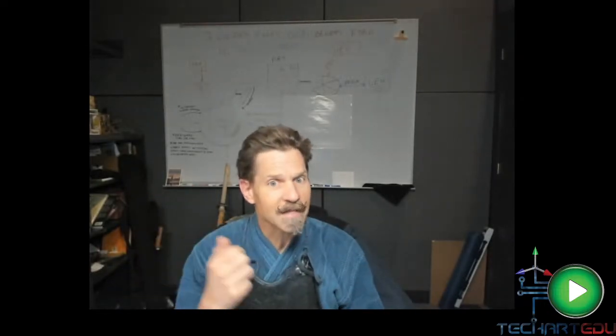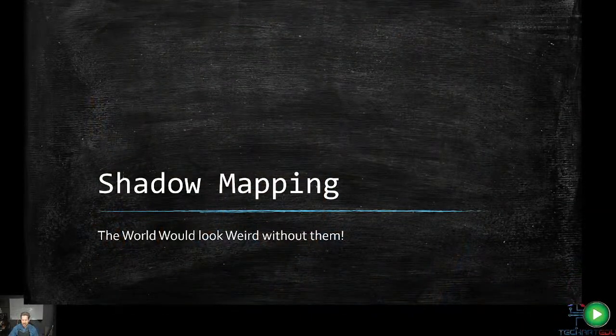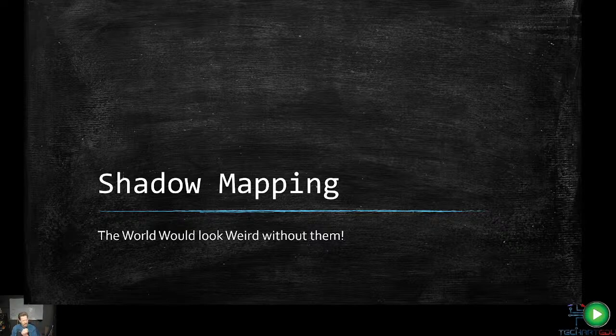We're going to finish off this overall series with this last segment, which is all about shadow mapping. Shadow mapping is something you've got to have in order to make stuff look real. It's a little more complicated and involved, but it's nothing beyond what we haven't talked about already. The most common technique is called shadow mapping.